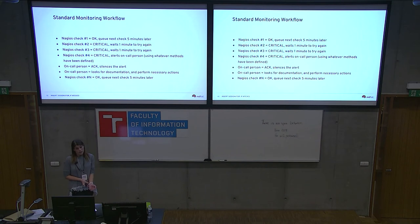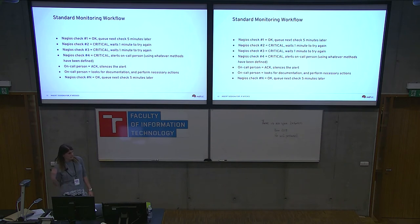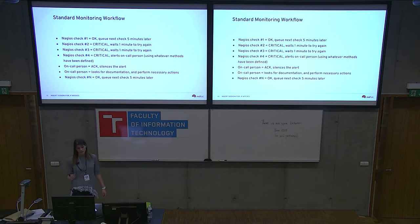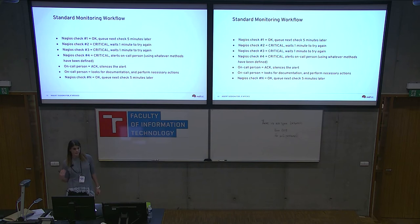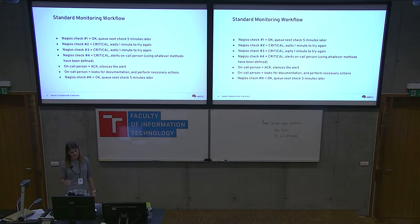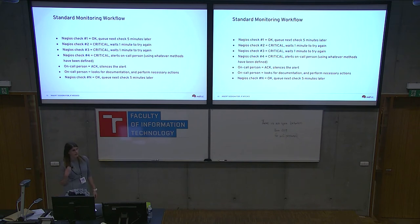Standard monitoring workflow for Nagios: if a service is okay, it checks every five minutes. If it comes back critical, it checks again a minute later, and again, and again. Once it comes back critical the fourth time, it alerts the on-call person. That person has to acknowledge the alert to silence it, then go look for documentation in a separate space, then perform the necessary actions provided by the service owner. Once fixed, it goes back to okay and Nagios continues checking every five minutes.